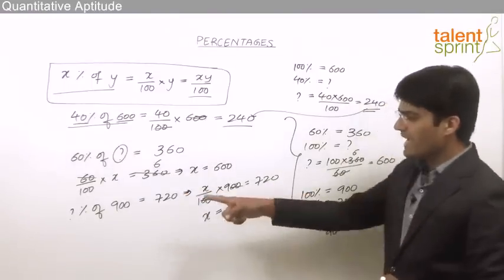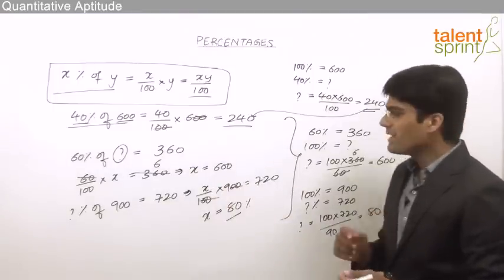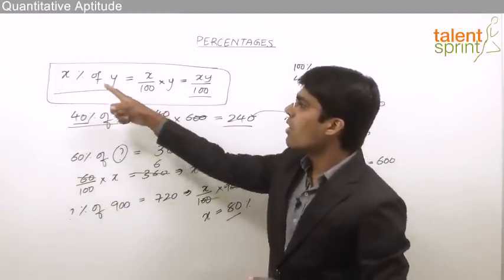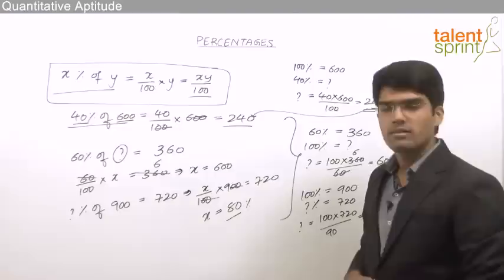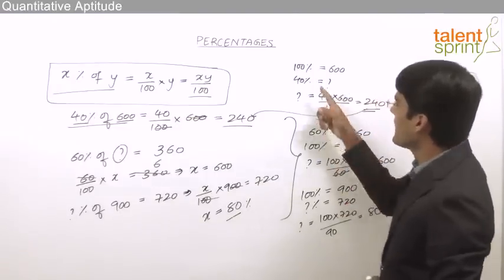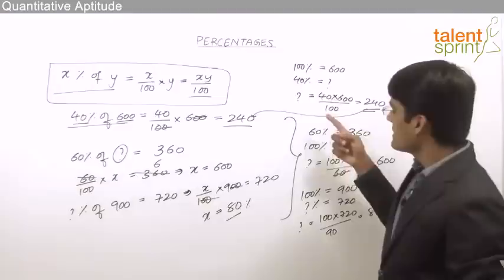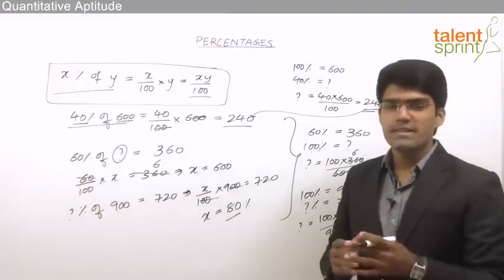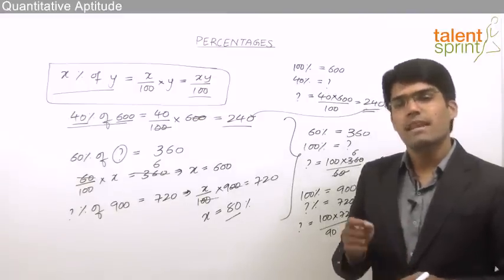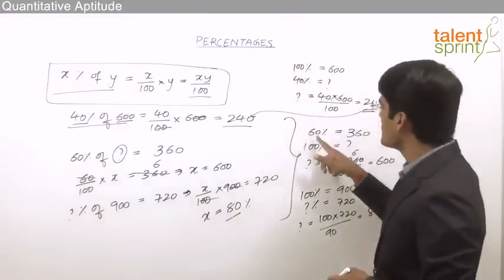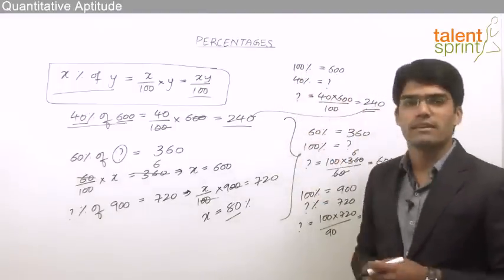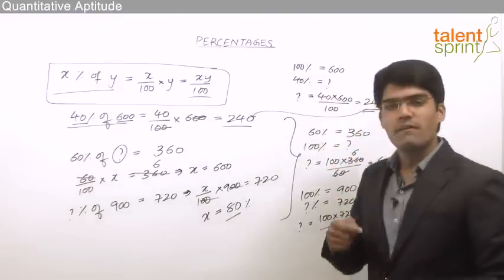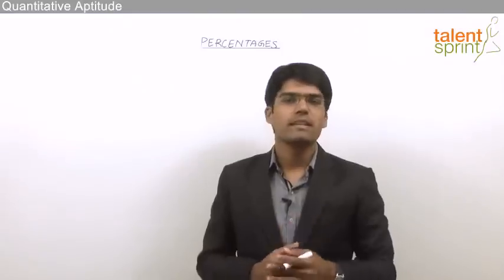So 80 percent of 900 is 720. Going by the equation, x percent of y equals xy by 100, where either the maximum value, percentage value, or absolute value must be calculated. In every question of percentages, always one percentage value is specified and the other has to be calculated. That can be done simply with cross multiplication, which allows us to solve questions very quickly.